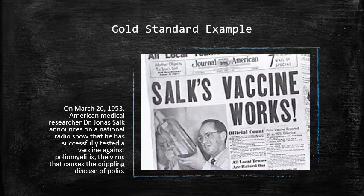Among the children given the Salk vaccine, 33 later developed paralytic polio, and among the children given a placebo, 115 later developed paralytic polio, which proven the effectiveness of the Salk vaccine.